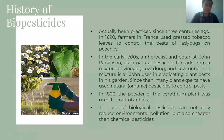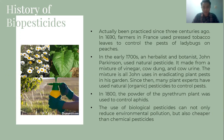The history of biopesticides has actually been practiced since three centuries ago. In 1690, a farmer in France used tobacco leaf to control the pest of ladybugs on peaches. In the early 1700s, herbalist and botanist John Parkinson used a natural pesticide made from a mixture of vinegar, cow dung, and cow urine to eradicate plant pests in his garden. Since then, many plant experts have used natural or organic pesticides. In the 1800s, the powder of the pyrethrum plant was used to control pests. The use of biological pesticides can reduce environmental pollution and is also cheaper than chemical pesticides.